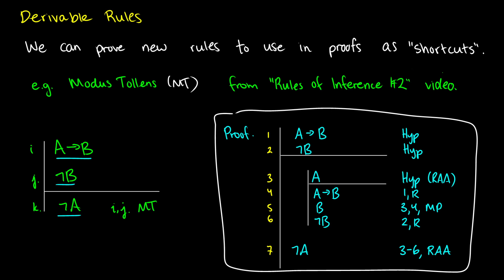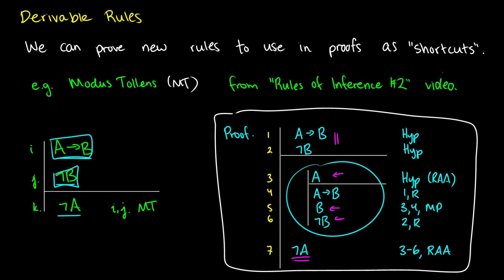This is how it works using our regular rules. We start with a arrow b and not b as an assumption. We assume a for our proof by contradiction. We copy some things, we get a contradiction out of it — b and not b — therefore we can claim not a. This is just a shortcut, because whenever we have a arrow b and we have not b, we know there's this little proof we can do to get not a. So we're just skipping that part, because we know how to do it.